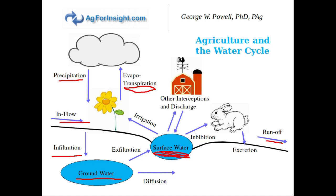That groundwater itself is also in motion — some of it moves deeper, some of it moves laterally by diffusion, and some of it will resurface. This exfiltration process might occur because of a change in topography where water springs to the surface, or where a large body of water underground sitting on top of an impermeable surface has enough pressure to force a column back up to the surface — we call that an artesian spring.